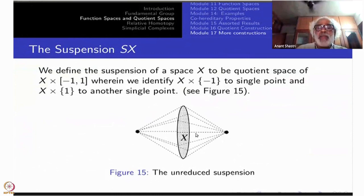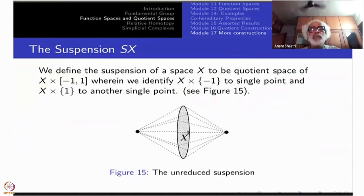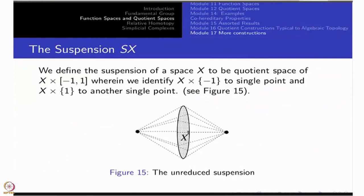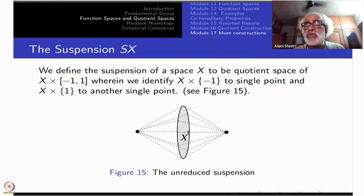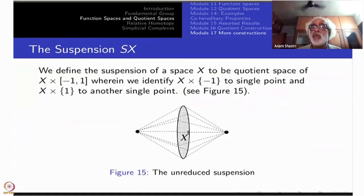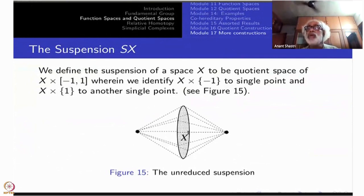For example, suppose X is a single point. Then the suspension of X: you take X cross [−1, +1], which is just [−1, +1], homeomorphic to [−1, +1]. So the cone over a single point was the interval; similarly, the suspension over a single point is also an interval.